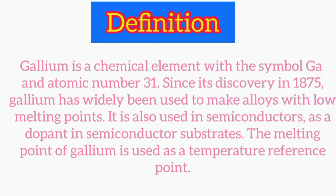Hello everyone, welcome to my channel. In today's video we will learn about the definition, properties, and uses of gallium. Gallium is a chemical element with the symbol Ga and atomic number 31.